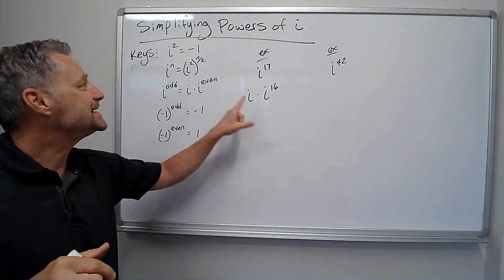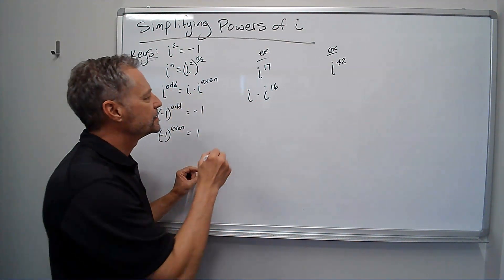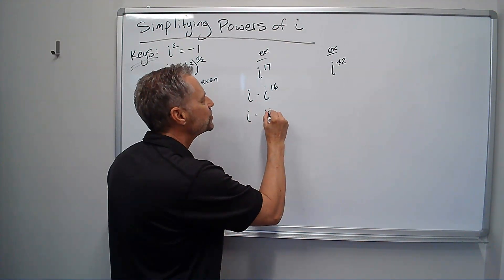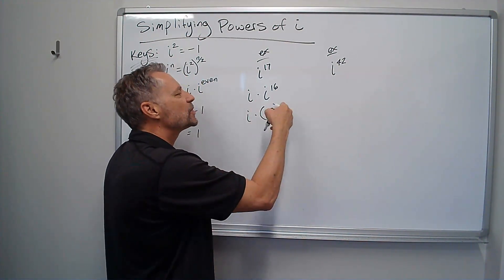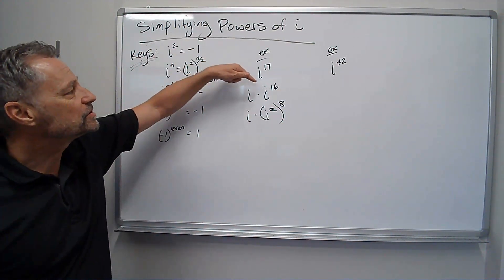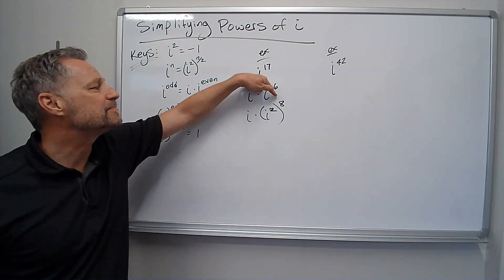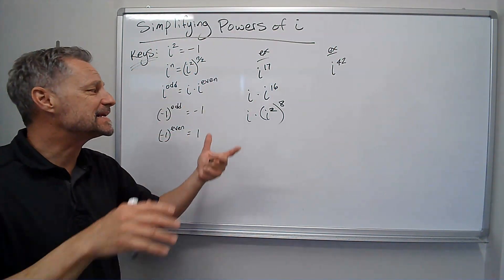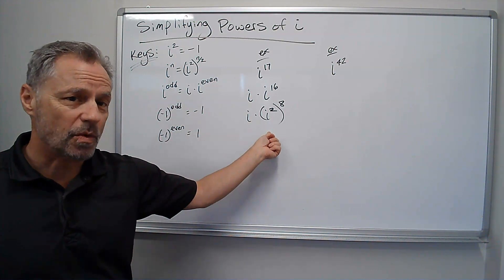But the 16th I want to get as an i squared. So I leave that i there. I'm going to do i squared. But i squared to what power is 16? That's got to be 8. And that was the n divided by 2. So 16 divided by 2 is 8, because 8 times 2 is going to be the 16th. But now I have an i squared, because I know i squared is negative 1.